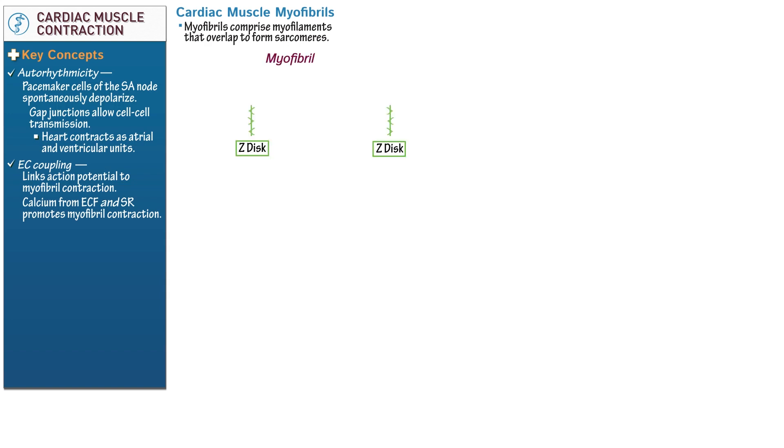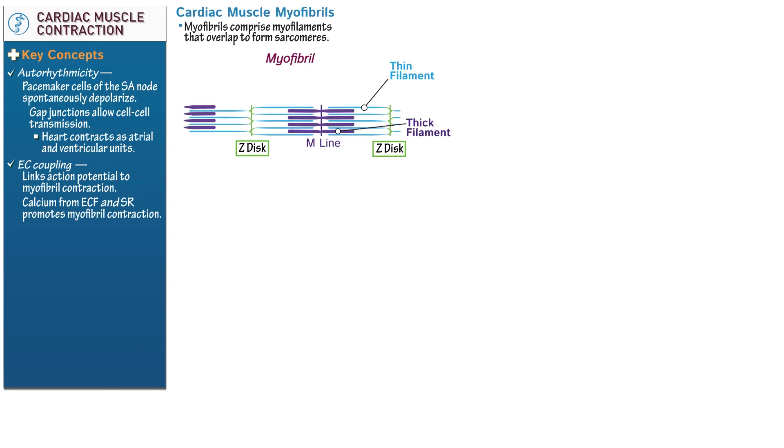Now let's review the basics of cardiac muscle myofibrils. Because cardiac and skeletal muscle myofibrils are so similar, we recommend reviewing skeletal muscle organization for more details. Each myofibril comprises proteins, notably the thick and thin myofilaments, which overlap to form contractile units called sarcomeres. First draw two Z-discs and show they anchor the thin filaments. The spaces between the thin filaments show that the thick filaments extend from the perpendicular M-line.